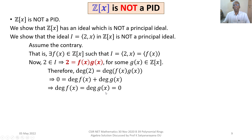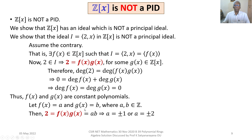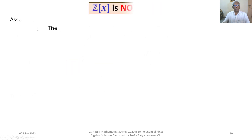Let F(X) = A and G(X) = B where A, B belong to Z. Then 2 = F(X)·G(X) = A·B. Since AB = 2 in the integers, either A = ±1 or A = ±2. We deal with two cases, and in each case we derive a contradiction.